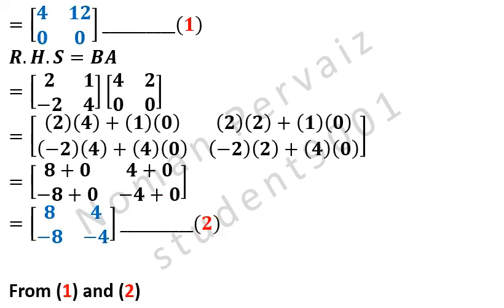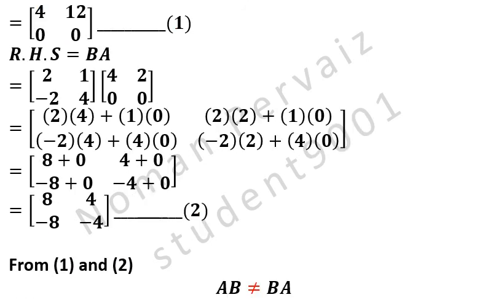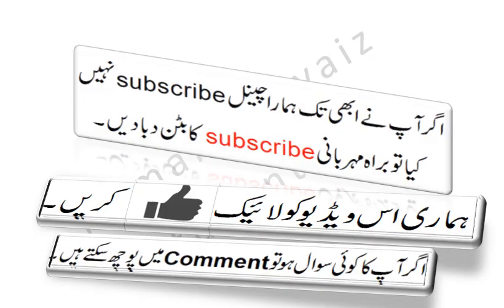Look at equation number 1 and equation number 2 — their values are not the same. So from equation 1 and 2, it is proved that AB is not equal to BA. Hence this is our answer. Please like this video and subscribe our channel.